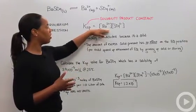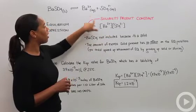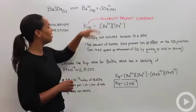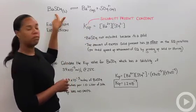We still have products over reactants. Here our products are Ba²⁺ ion and SO₄²⁻ ion, and it would be over barium sulfate.